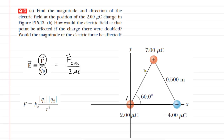We can see that we have a positive seven microcoulomb charge located up here. A positive charge would repel the positive two microcoulomb charge, so there would be a repulsive force pushing the two microcoulomb charge this way, which we label F27. There's another force acting on the two microcoulomb charge because we have a negative charge located right next to it. Opposite charges attract, so the negative charge is pulling the positive charge to the right. We call that force F2 negative four.